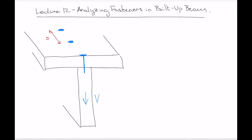This beam is experiencing an internal shear force V. In terms of the relationship between shear force and shear stress that these nails are seeing, at the location of the junction we know there is going to be a shear stress oriented downward, and also the shear stress is going to have a component along the length of the beam as well, and that's going to be equal magnitude.